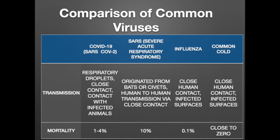Then you have flu, which is from close human contact and infected surfaces as well — the mortality is 0.1%. Then we have SARS and COVID-19. They're both human-to-human transmission and close contact as well as from animals. In SARS, the mortality rate was 10%, and in COVID-19, we think the mortality is somewhere between 1 to 4%.